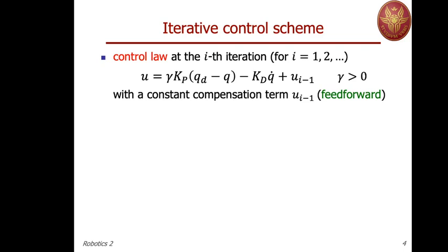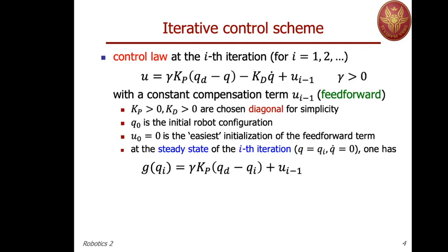In the rest of this presentation, without loss of generality, we will consider Kp and Kd matrices chosen as diagonal and positive definite. We label Q₀ as the initial robot configuration, where we start from with zero velocity, and we have to initialize our feedforward term. The easiest initialization, assuming no knowledge about any useful information, is to set U₀ equal to zero.